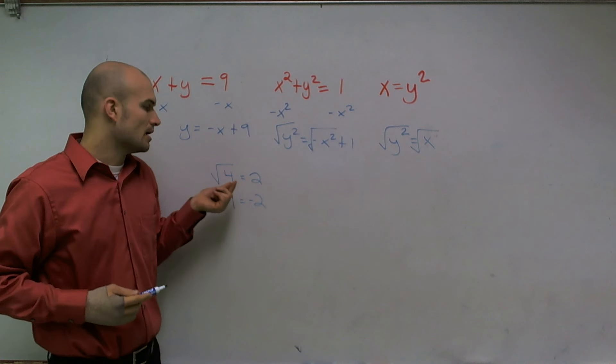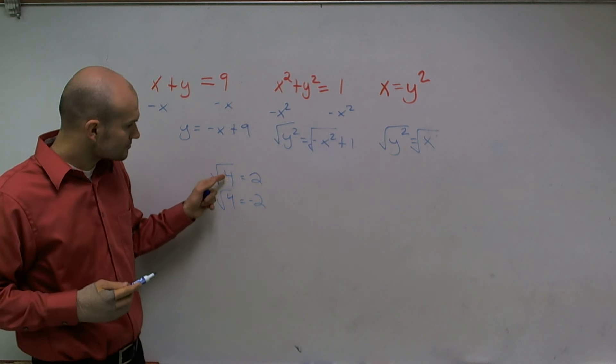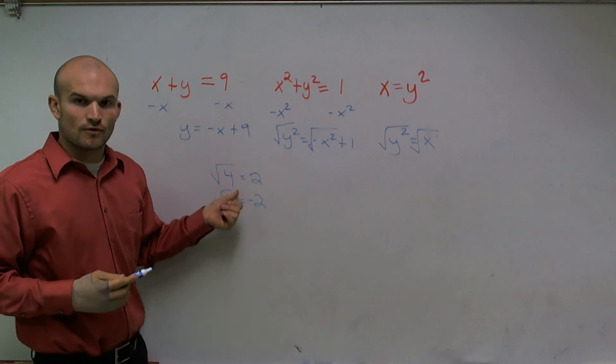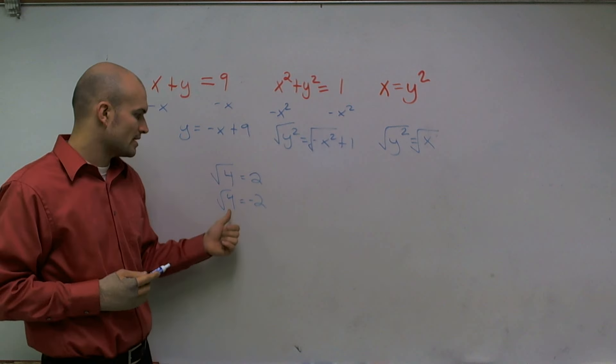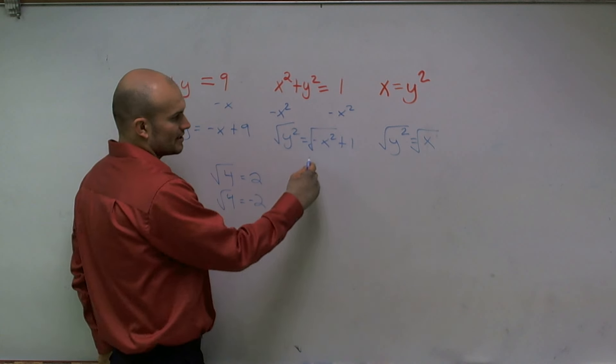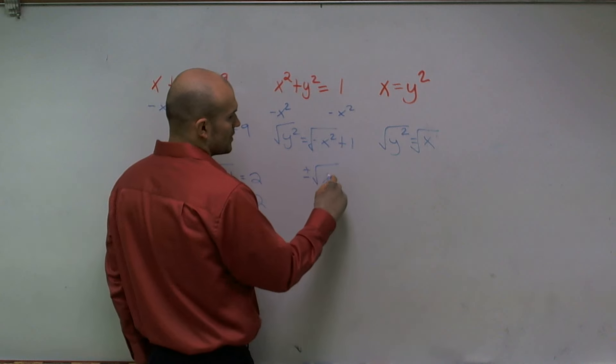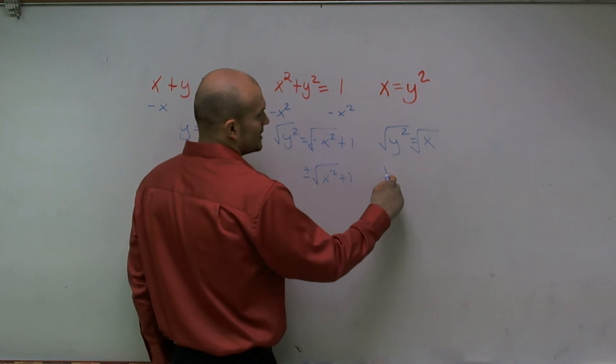Because two squared is—the square root is what two numbers multiply to give you your radicand. So two squared equals four, as well as negative two squared equals four. Therefore my answer here is actually going to be plus and minus square root of negative X squared plus one, and here plus and minus square root of X.